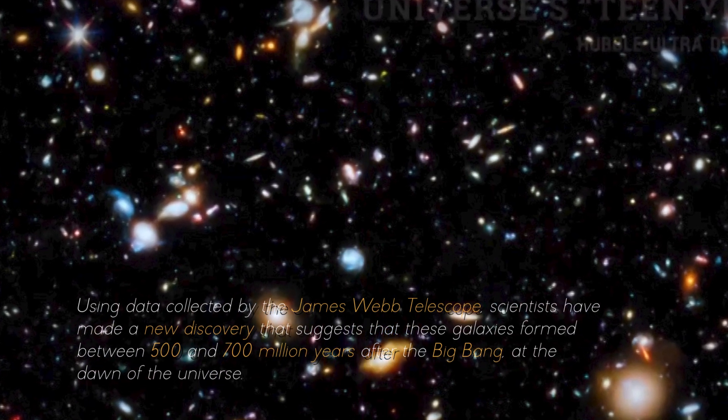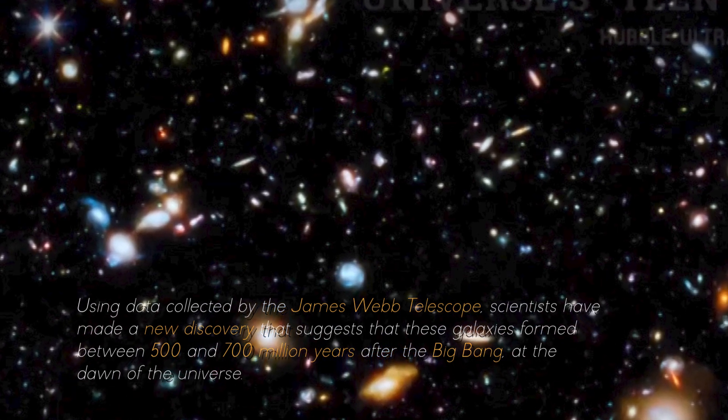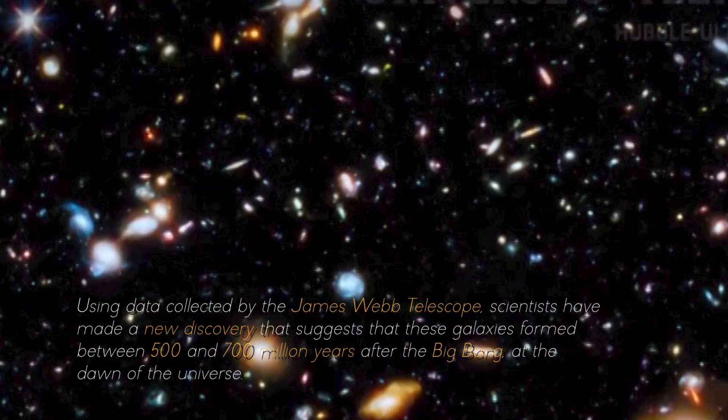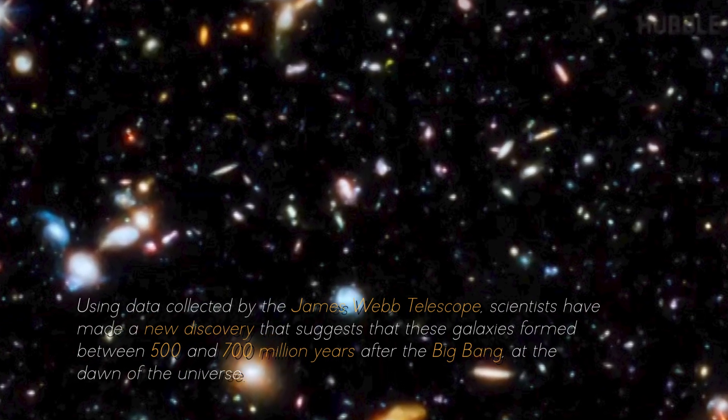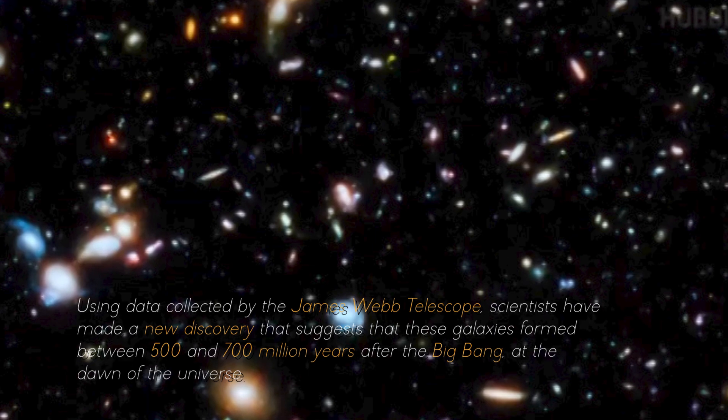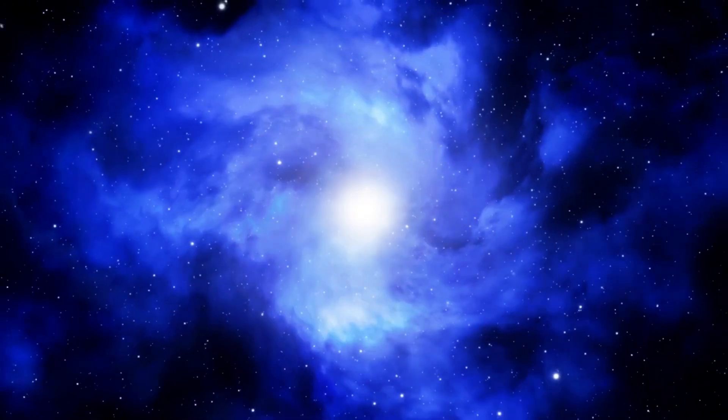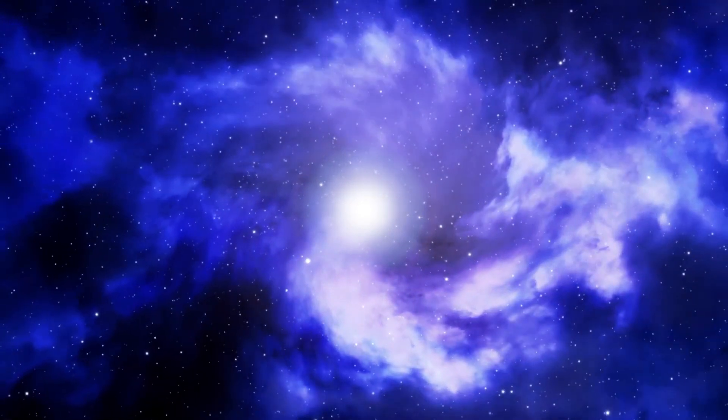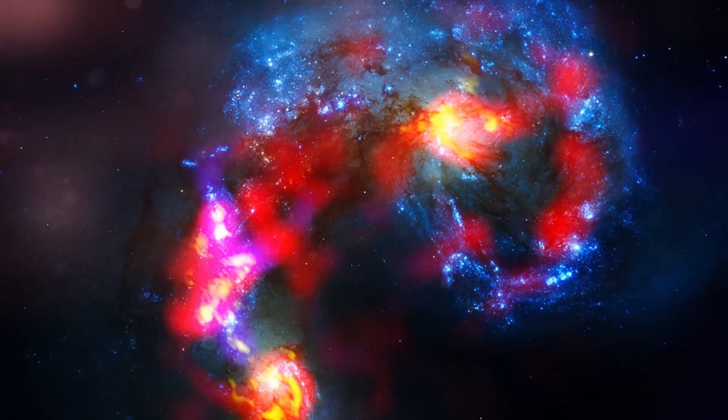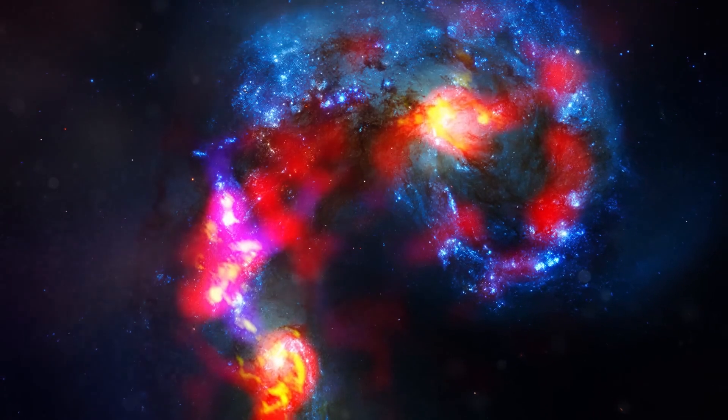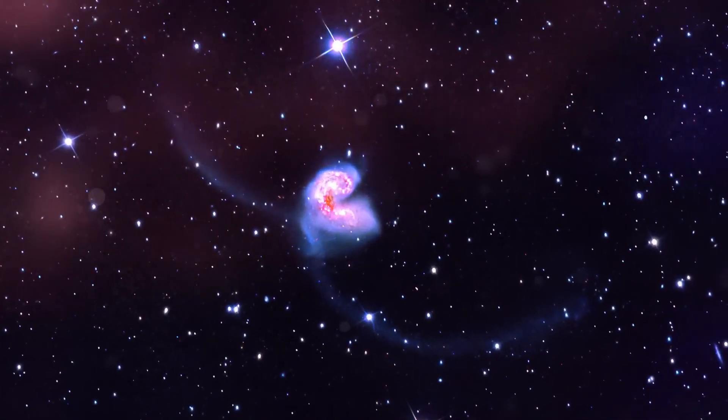Using data collected by the James Webb Space Telescope, scientists have made a new discovery that suggests that these galaxies formed between 500 and 700 million years after the Big Bang, at the dawn of the universe. To understand this coherently, we must keep in mind that the universe is approximately 13.8 billion years old. The light emanating from these ancient galaxies provided completely new information about the nature of the universe. This light reveals a direct link to the dawn of the cosmos, and the evidence we obtain allows us to estimate when these galaxies formed.